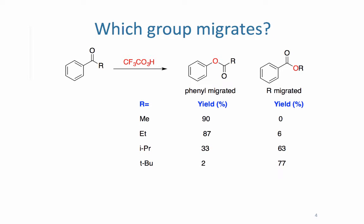The next thing we're going to look at is which group migrates. Very often we're going to have unsymmetrical ketones, which means ketones that have different groups on either side.